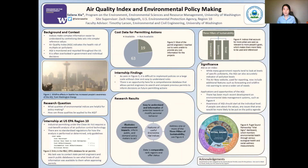Secondly, there's been a lot of recent developments on large environmental data management systems such as the one shown below. This is the Puget Sound Partnership Vital Signs Dashboard, which monitors environmental health through various ecological and social wellness measurements such as water quality, air quality, and others to provide a more comprehensive picture of Puget Sound health. I want to end by saying that awareness of air quality index should start at the individual level. If people care about the values, any issue that arises would be more likely to end up in the policy agenda.